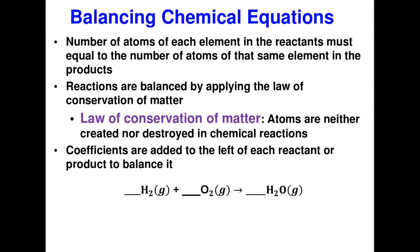Balancing equations simply obeys the law of conservation of matter, also called the law of conservation of mass. Matter can neither be created nor destroyed in a chemical reaction; it changes from one form to another. In balancing equations, what we are doing is balancing the number of atoms of each element present. The number of atoms of each element on both the reactant side and the product side must be equal.